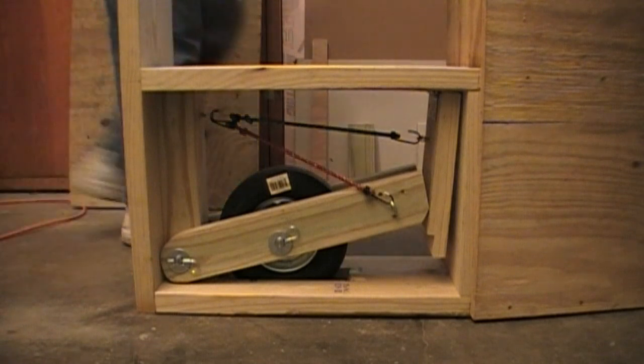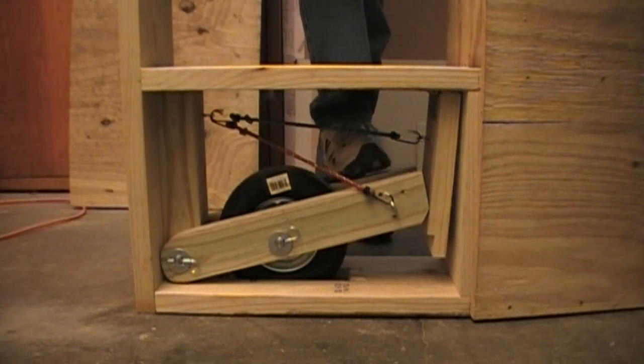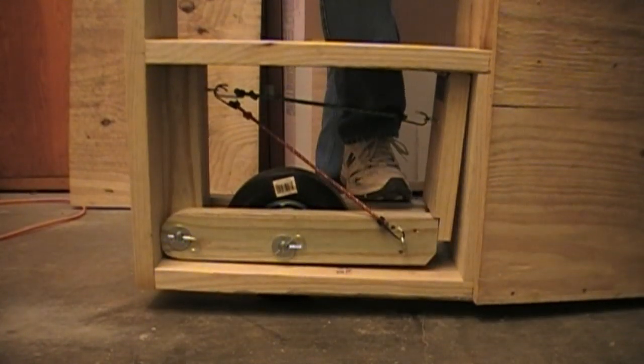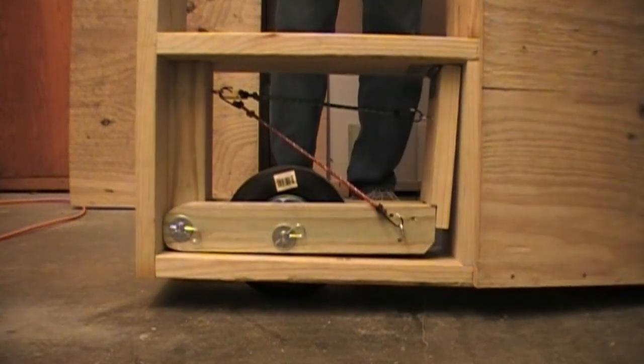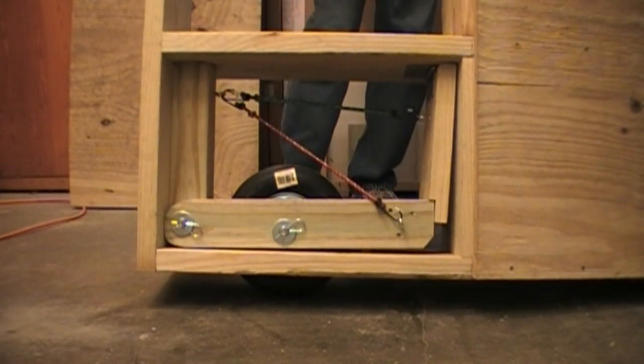So the way this works, when you're ready to move it, you just step down on that, now it's up on the wheel. I don't know if you can see it or not, if I lean it back you might see the wheel sticking out there.